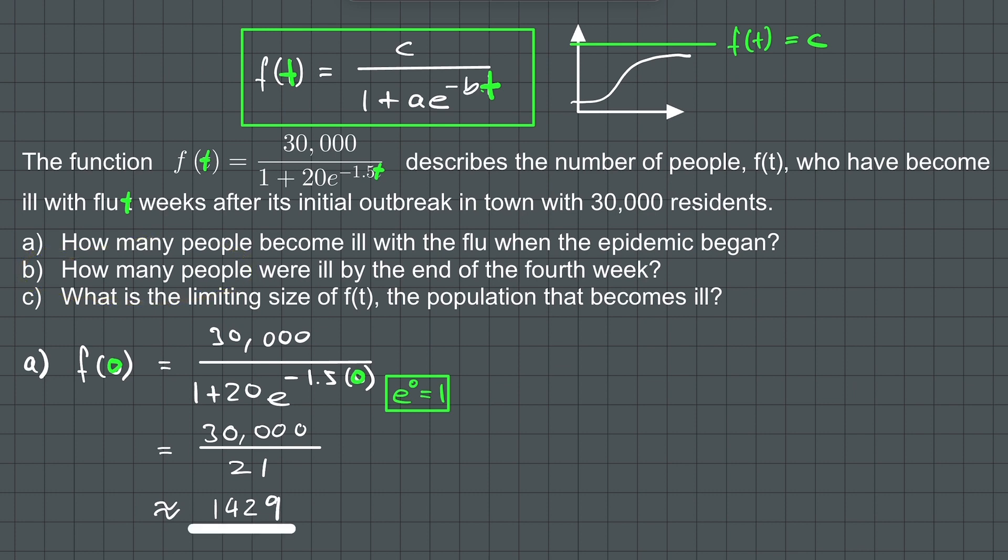How many people were ill by the end of the 4th week? When we substitute 4 for t in the logistic growth function, we find the people who were ill at the end of the 4th week. So we are going to use the given logistic growth function f(t) equals 30,000 over 1 plus 20 times e raised to the power of negative 1.5 times t.